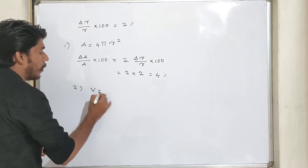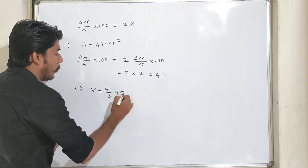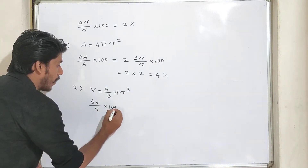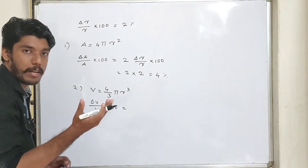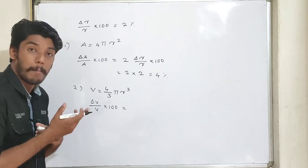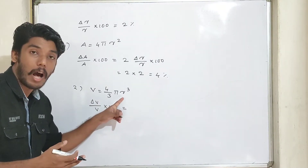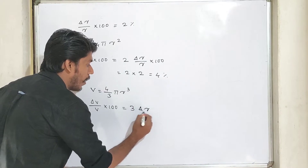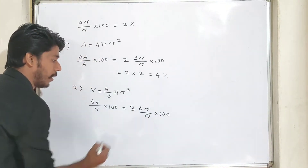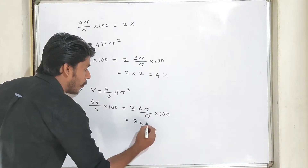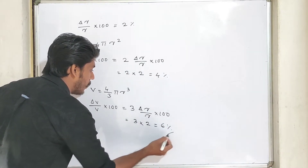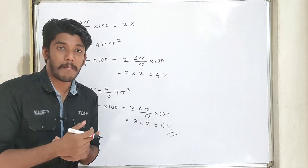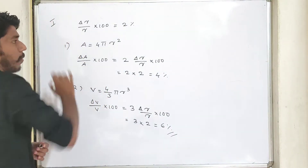For volume, the formula is 4/3 π R cube. Here, 4/3 and pi are constant values. The variable is R, and the power is 3. So: 3 into delta R by R into 100 equals 3 into 2%, giving 6%.